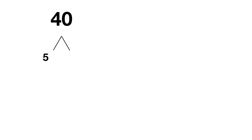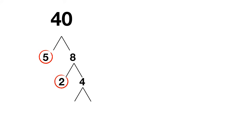Now it's time for you to try on your own. What are the prime factors of 40? Well you could start by splitting 40 up into 5 times 8. You could have also done 4 times 10 — it won't change your final outcome. Then 5 is a prime number, but 8 can be split up into 2 times 4. 2 is a prime number, but 4 can be split up into 2 times 2. And both of these 2s are prime.